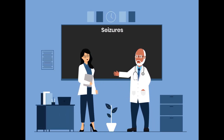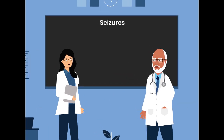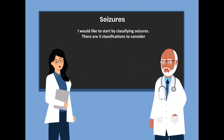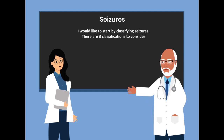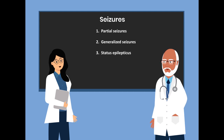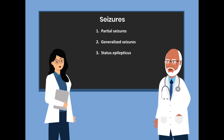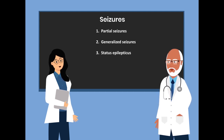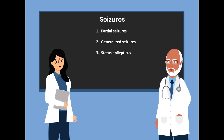Today we'll be talking about seizures. I would like to start by classifying seizures. There are three classifications to consider. First, partial seizures. Secondly, generalized seizures. And thirdly, status epilepticus.